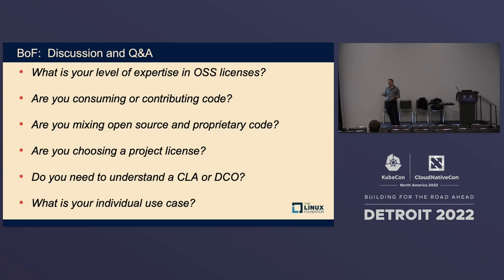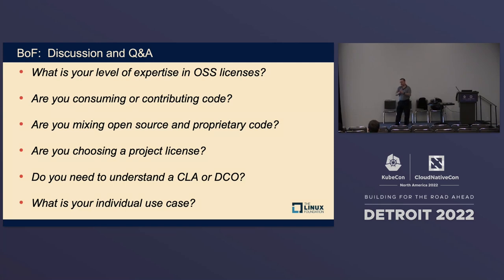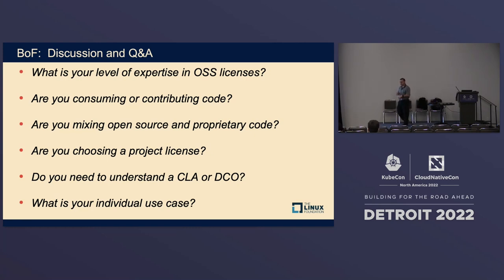If you're contributing code, are you writing all that code yourself, or are you mixing your own code with other open source and then contributing it? If you're writing all your own code, you'll most likely be contributing it to an open source project under either a CLA or a DCO — so you want to take a careful look at those. If you work for a company, the company may be responsible for the CLA or the DCO, and you should check with your legal team.